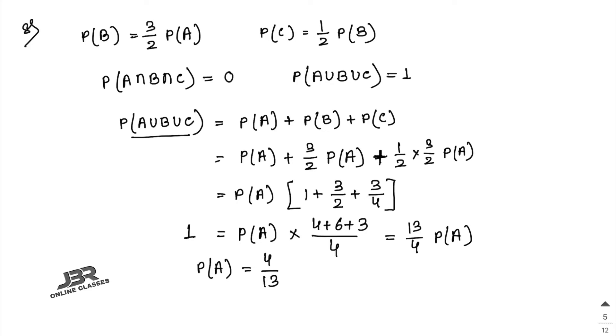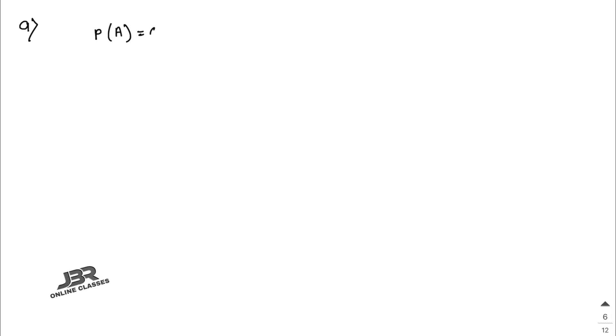Sum number nine: A and B are two candidates seeking admission to an engineering college. The probability that A is selected is 0.5, and the probability that both are selected is at most 0.3 — that means P(A ∩ B) ≤ 0.3. Is it possible that the probability of B getting selected is 0.7?